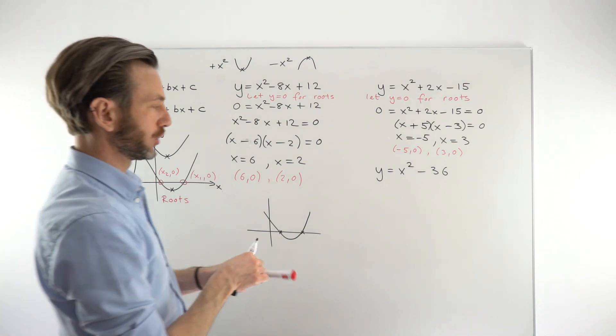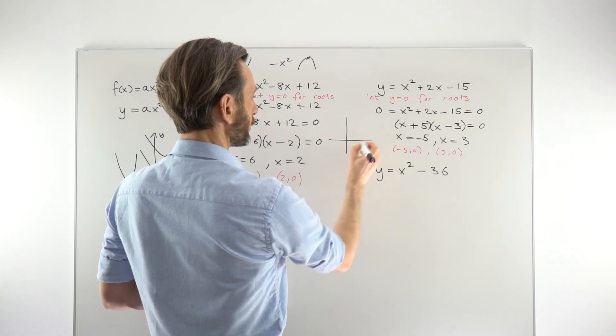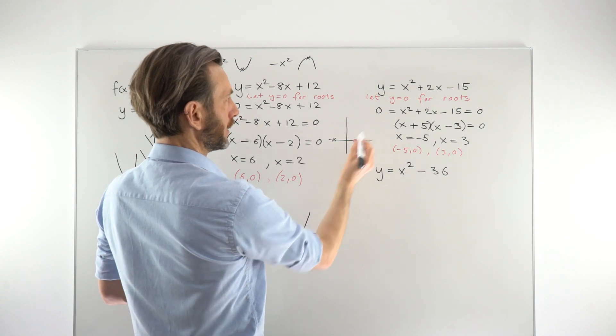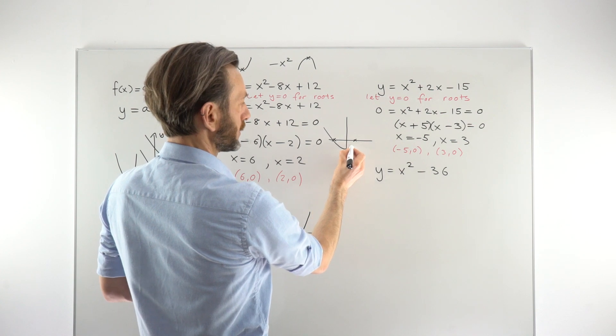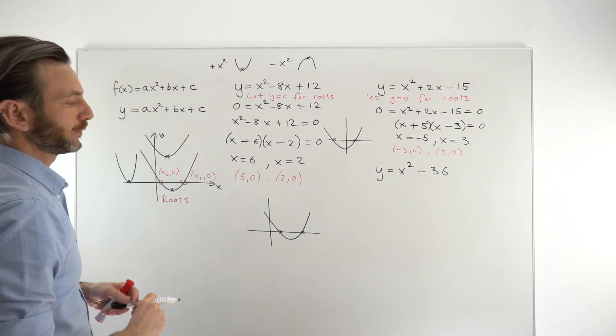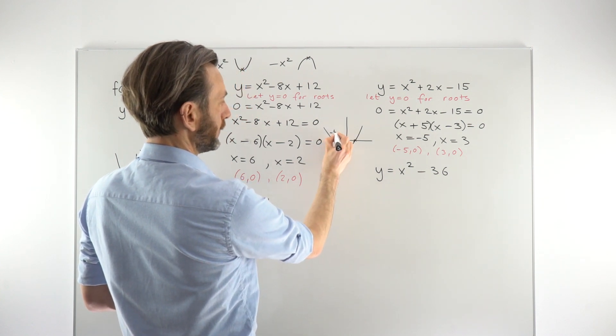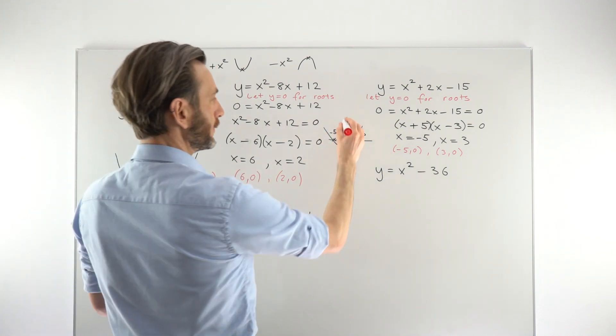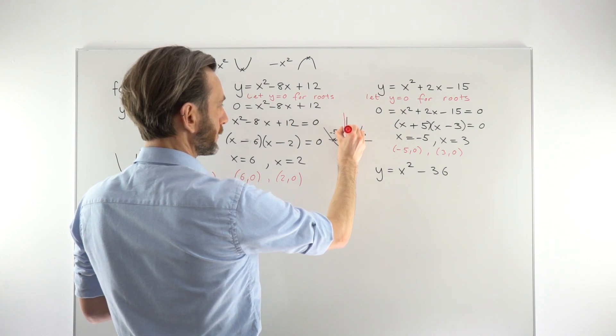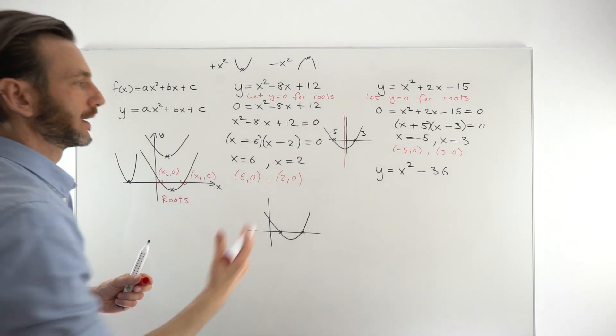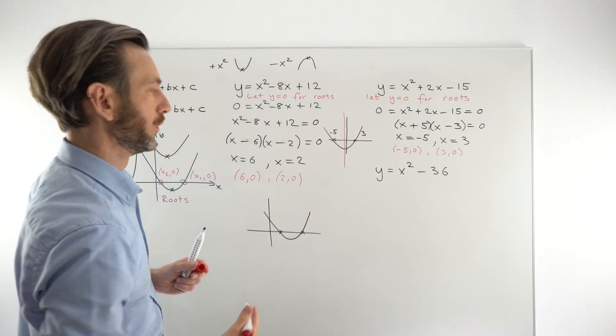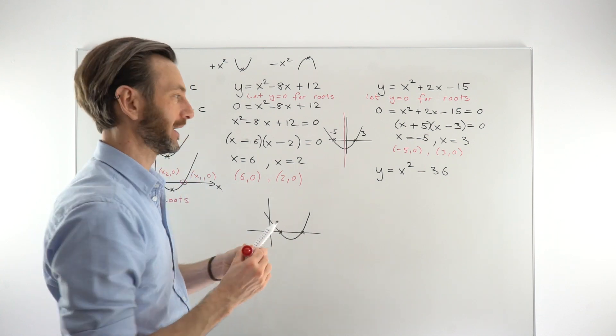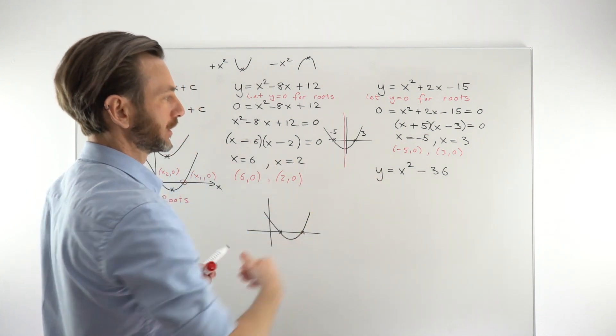If you wanted to draw a graph of that, you could just plot those points on an x, y axis. So minus 5, let's roughly say that's going to be there. Positive 3, let's say that's going to be there. It's a positive x squared term, meaning that it's going to go down something like that. Be a little bit careful with the turning point for that one, because this was minus 5 and this was at 3. So that does not mean that the symmetry would be on the y axis. The symmetry, this line of symmetry, would be just a little bit to the left of the y axis. That's a really common mistake.